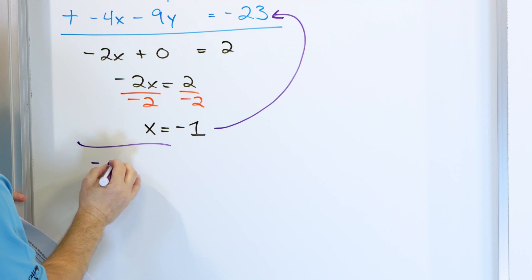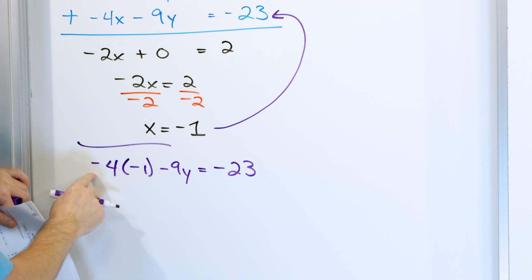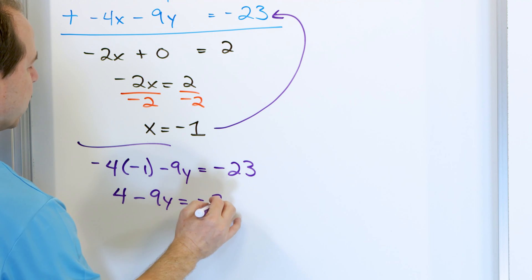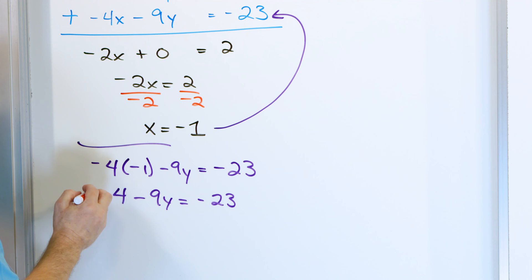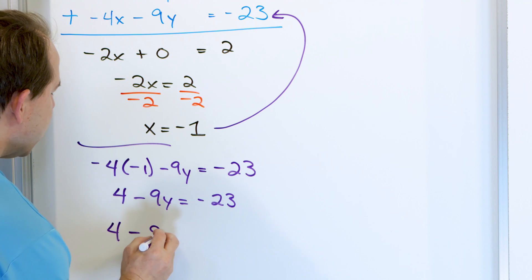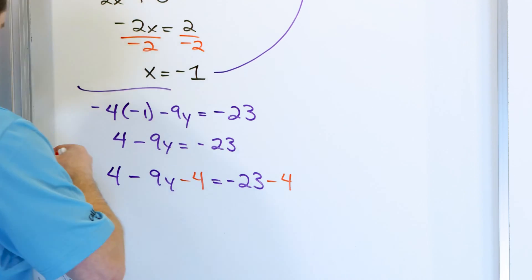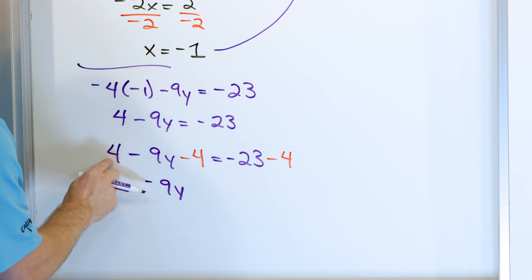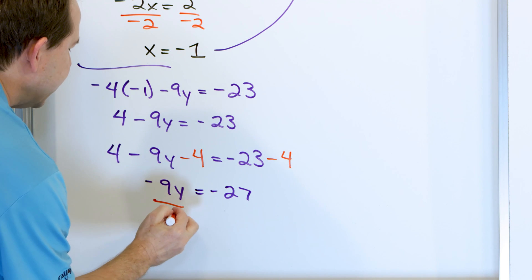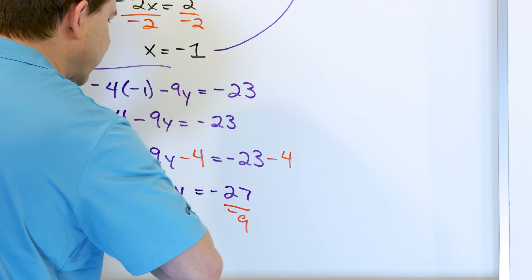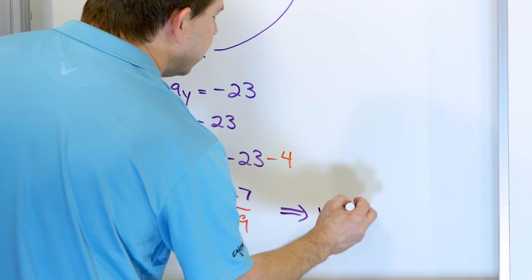So we have negative 4 times x, but x is now negative 1, minus 9 times y, equals negative 23. This becomes positive 4 minus 9y equals negative 23. Since we have positive 4, I'll subtract 4 from both sides. The negative 9y remains, and negative 23 minus 4 is negative 27. Then dividing by negative 9 to get y by itself, the negative 9s cancel and we get y equals positive 3.